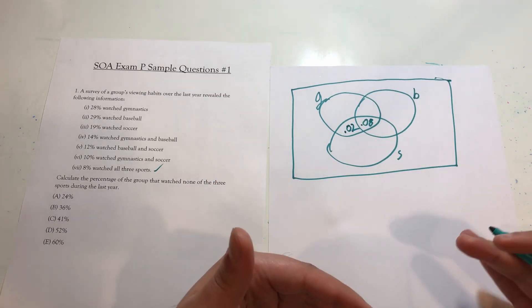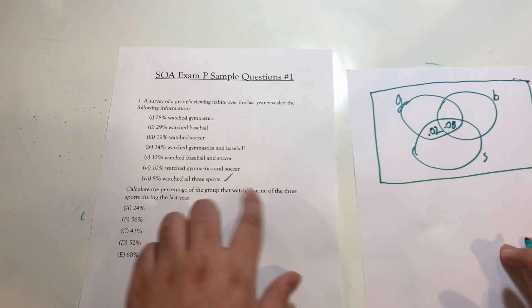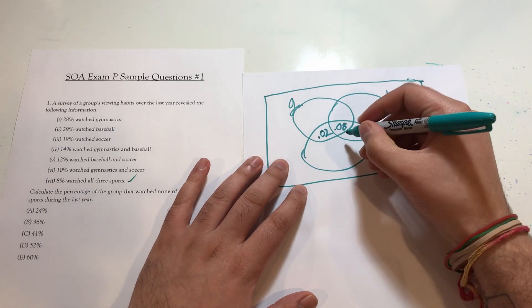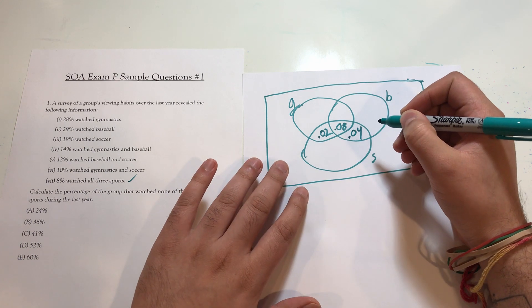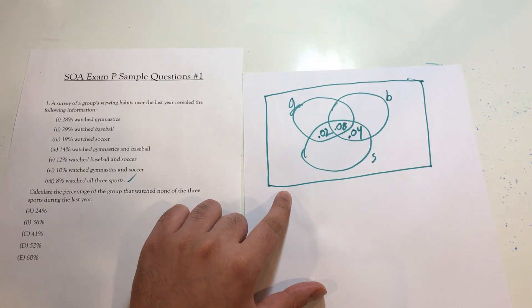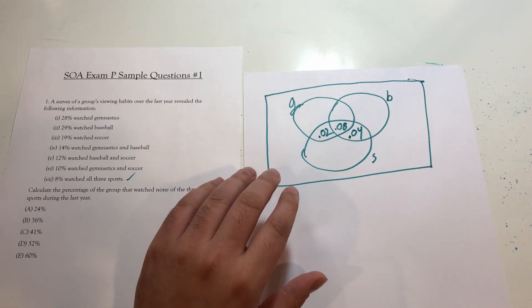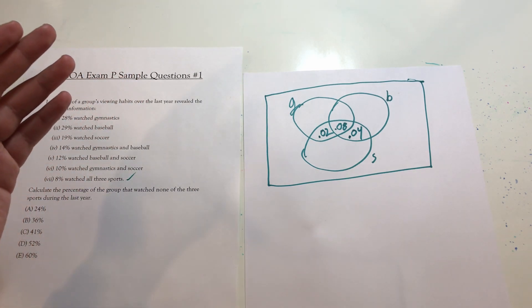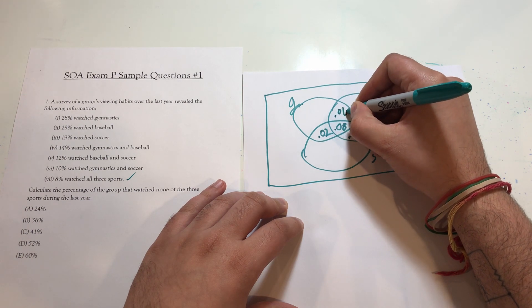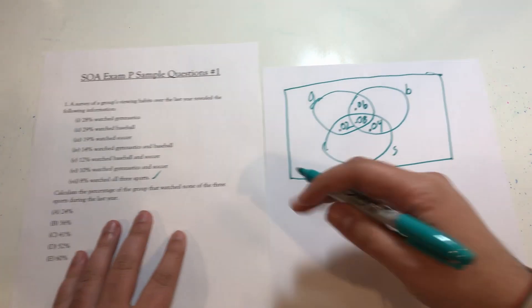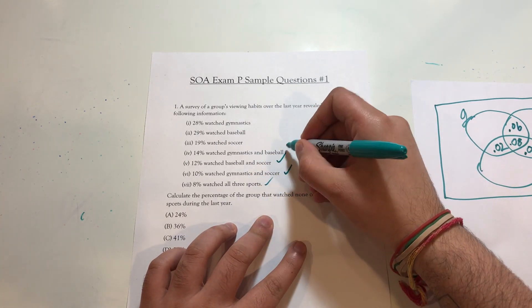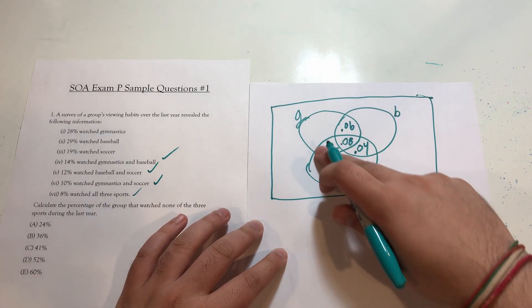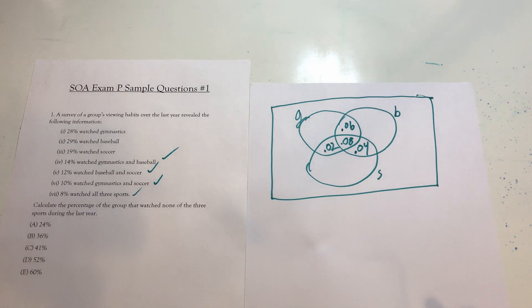And hopefully you're starting to see a pattern here. Those that watched soccer and baseball, that's 12%, 0.12. Meaning 0.08 minus 0.12 is 0.04. And gymnastics and baseball is 14%. So it's going to be 0.14 minus 0.08, which should be 0.06. All right, now we can go back to our top three pieces of information. So I'm just going to check these off as having been done.